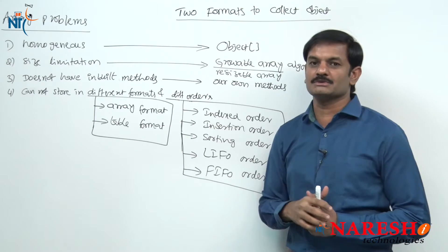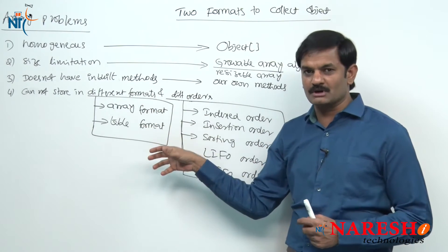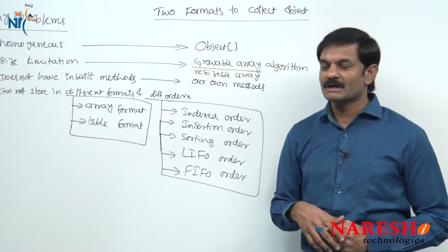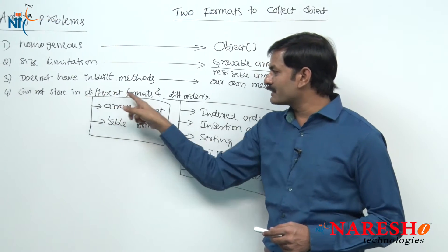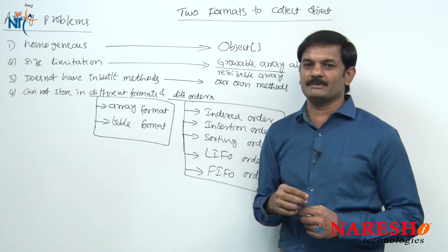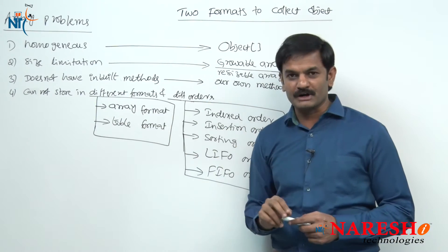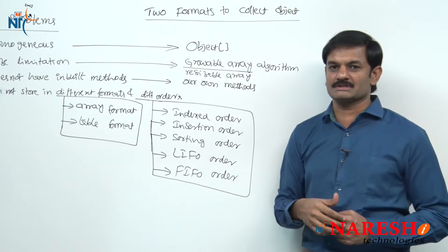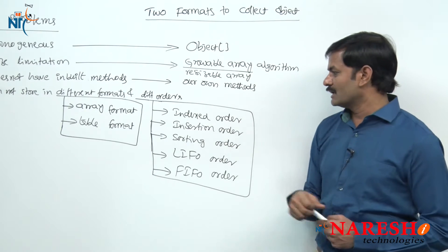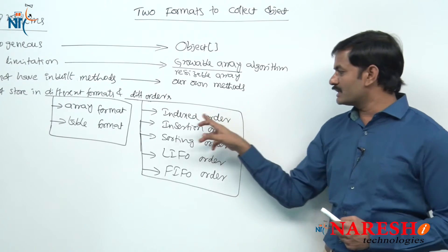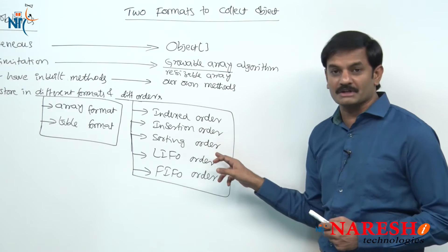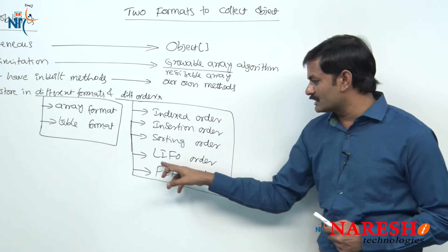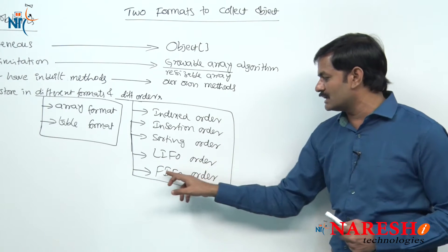To solve this problem, you should have an idea of what the different formats are for storing objects and what the different orders are for storing and retrieving. There are 2 formats: array format and table format. We can store objects in indexed order, insertion order, and sorting order. While retrieving, we can retrieve in last-in-first-out order and first-in-first-out order.